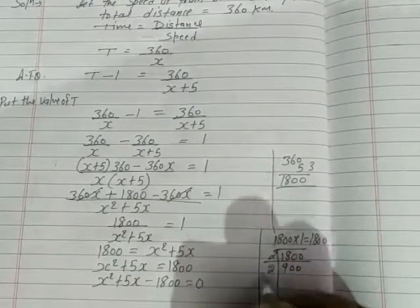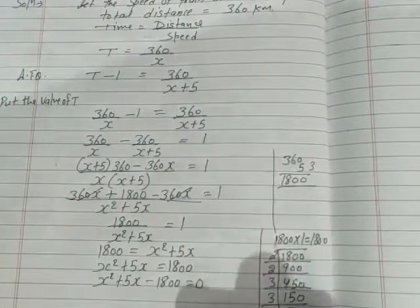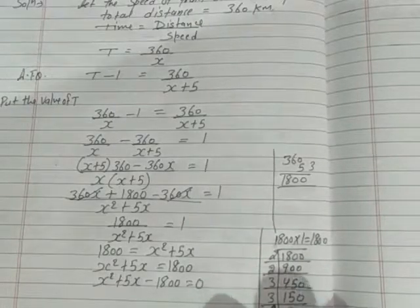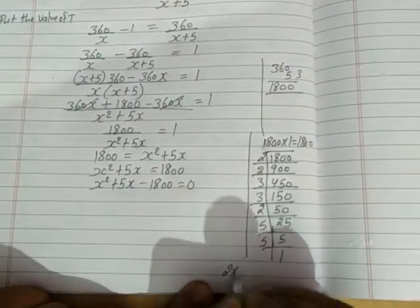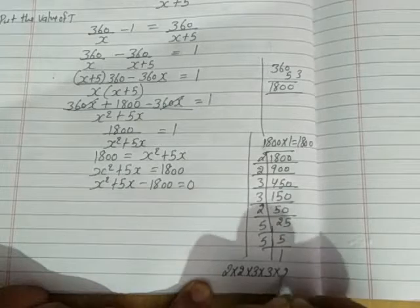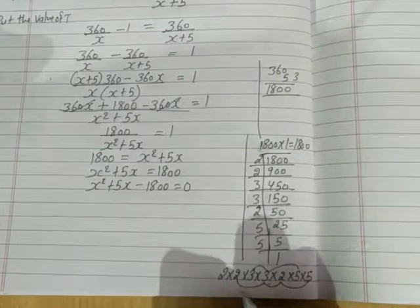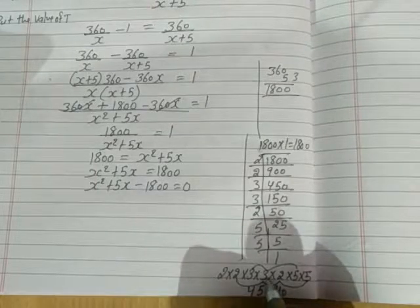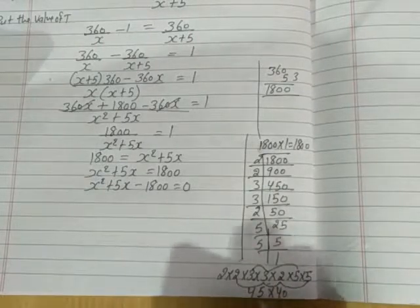1800, 2, 900, 2, 450, 3, 150, 3, again, 25, 5, 5, 5, 1. I will write this here. Factor 2, 2, 3, 2, 5. 45, 40, 5. 15, 45 and this 5 to the 10 to the 20 to the 40, 45 over 40.